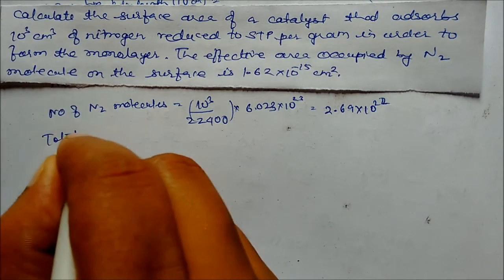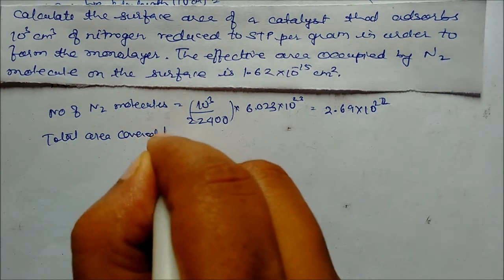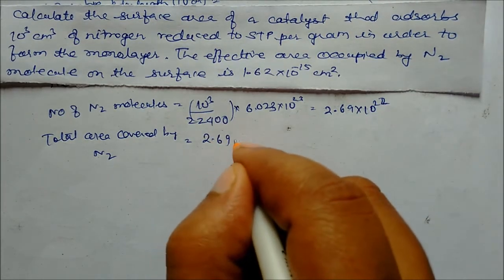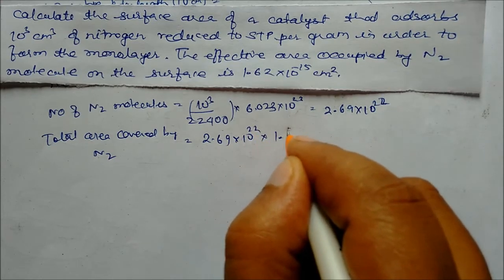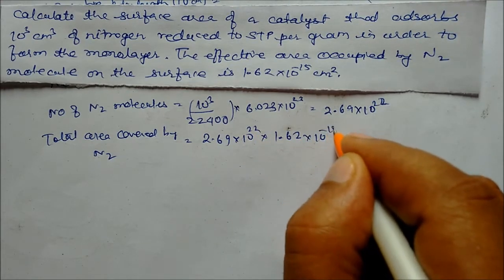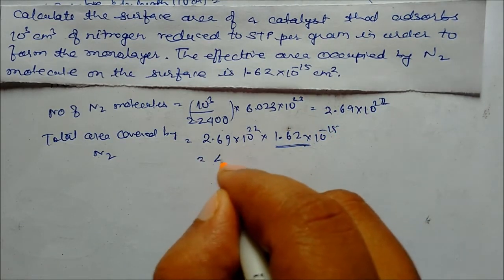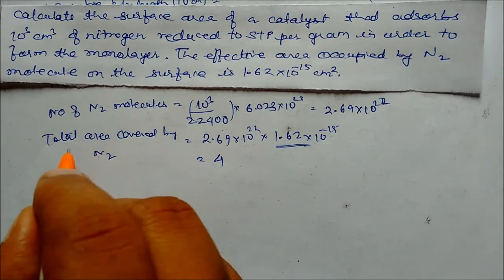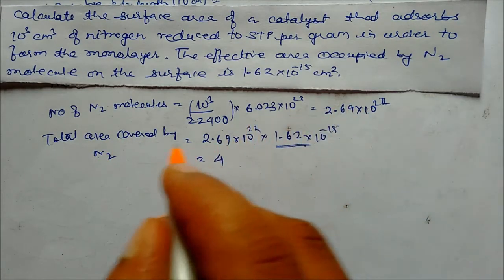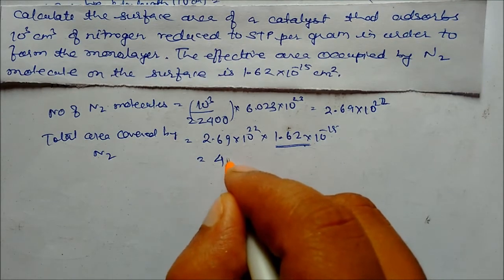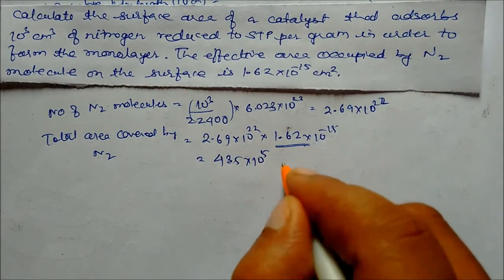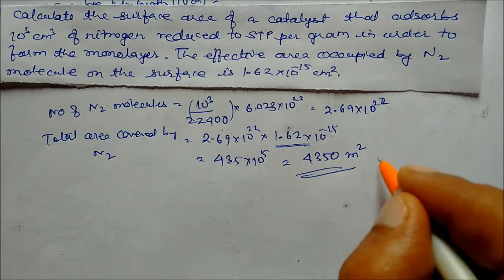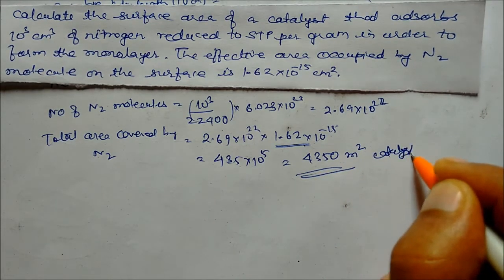Now total area covered by nitrogen: number of molecules is 2.69 into 10²² multiplied by effective area per molecule, 1.62 into 10⁻¹⁵ cm squared. So the surface area of the catalyst, which equals total area covered by nitrogen molecules, comes out to 4.35 into 10⁵ cm squared, which is 4.35 m squared.